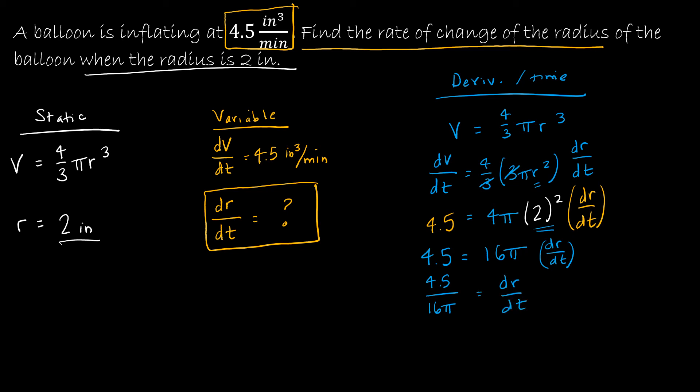And in this case, because it's not going to be a whole number answer, I'm going to just go ahead and find it as a decimal. And using a calculator, I find that dr over dt is approximately 0.09 inches per minute. So that is my final answer.